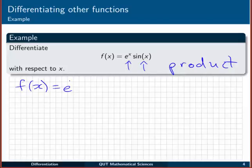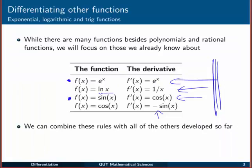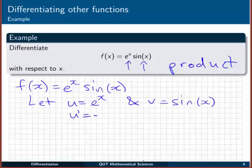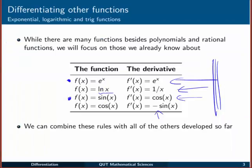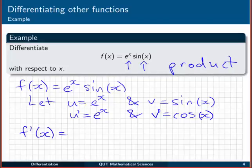Alright, so given f of x is e to the x sin x, I'm going to say let u equal e to the x and v equal sin x. Getting ready for our product rule. And to use the product rule, we need those derivatives. So u dashed, our table back here says the derivative of e to the x is e to the x itself. So u dashed is e to the x. And v dashed, the derivative of sin of x, the derivative of sin of x is cos x. So we can just write that one straight in cos x.